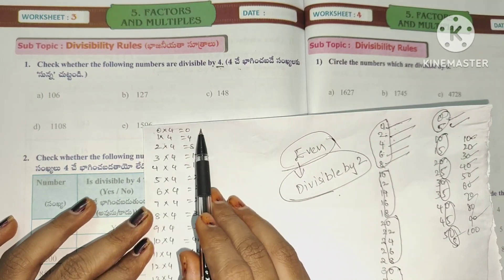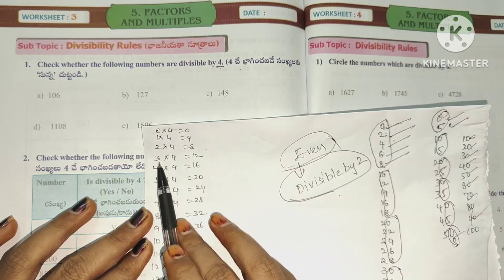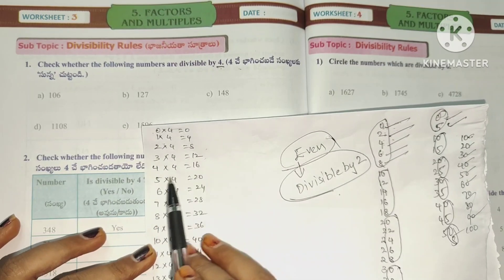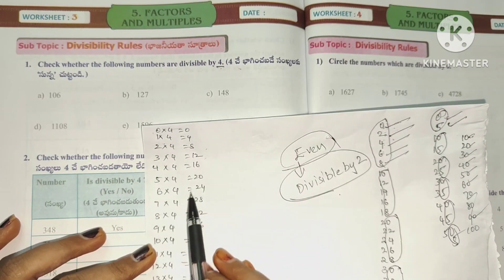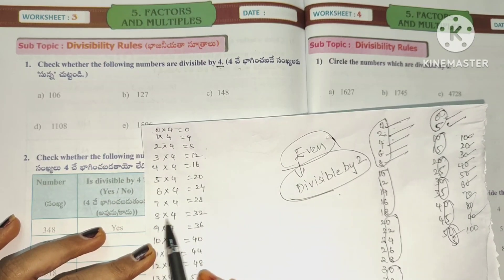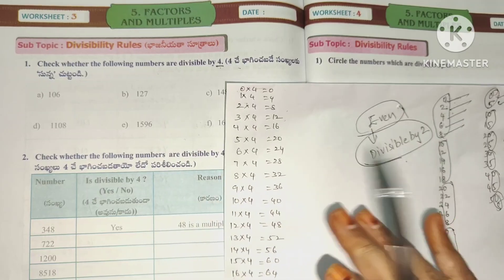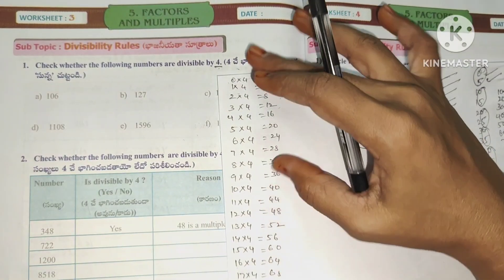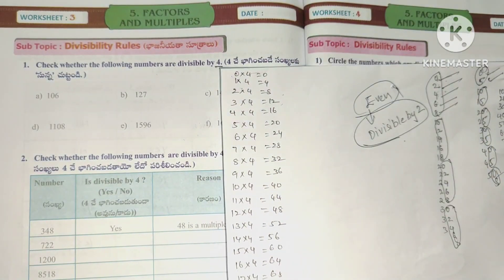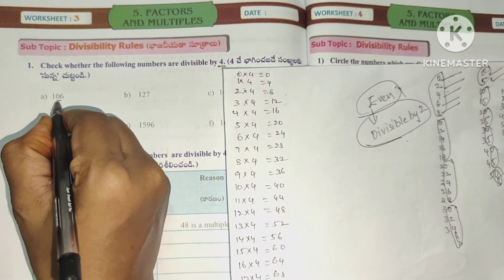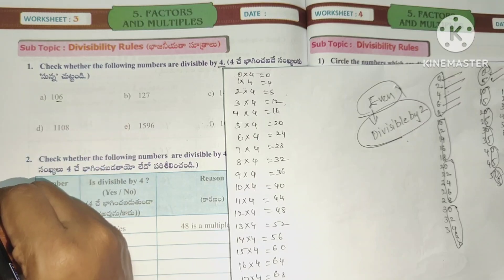The 4 times tables are: 0×4=0, 1×4=4, 2×4=8, 3×4=12, 4×4=16, 5×4=20, 6×4=24, 7×4=28, 8×4=32. We have up to the 20 times tables. So we have the last two digits — here are the 4 tables to check against.